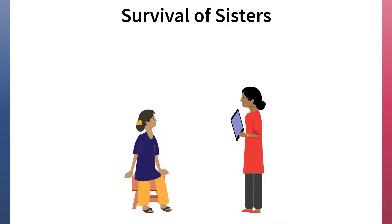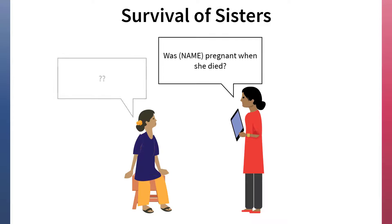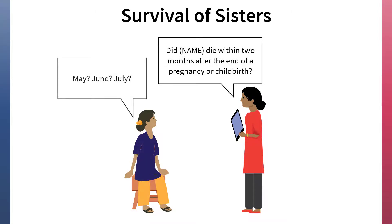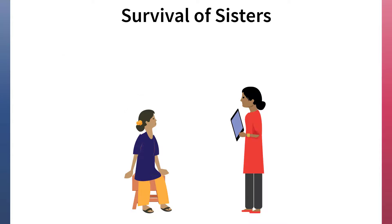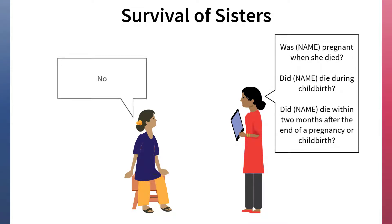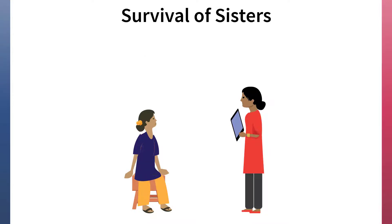But relying on a sister's report of death has limitations. Women may not know whether their sister was pregnant or had recently been pregnant when she died, or they may not accurately recall the exact timing of a sister's death. Additionally, women may be reluctant to report a sister's death, particularly if the death was abortion-related. These issues can make it hard to collect accurate information about pregnancy-related mortality in DHS surveys.